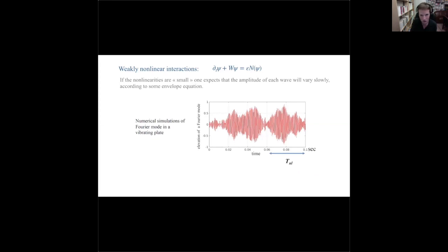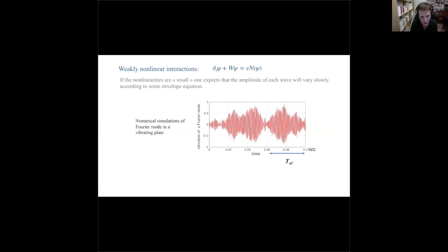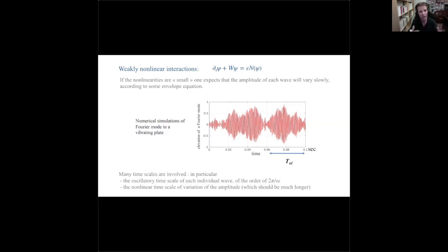Here's a picture from someone in the Simons collaboration — a real experiment with a vibrating plate. You compute Fourier modes and see things oscillating very strongly but with a very large amplitude envelope. We want to understand this profile — that's wave turbulence. Can we understand the different time scales and extract from the equation the equation for the amplitude? Could we do that?